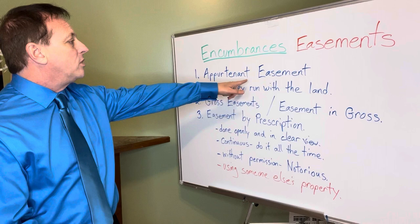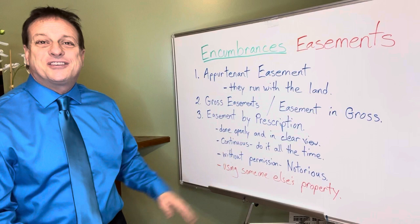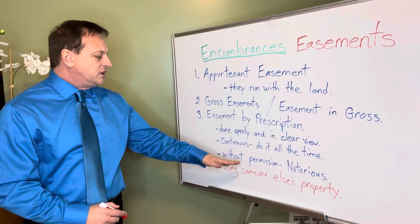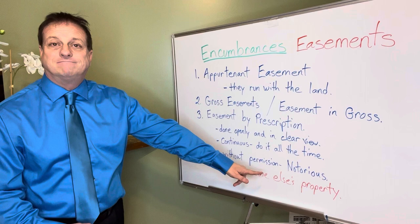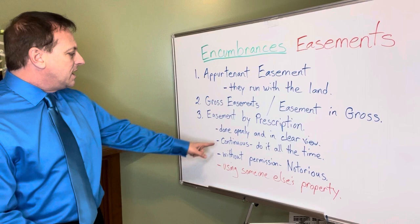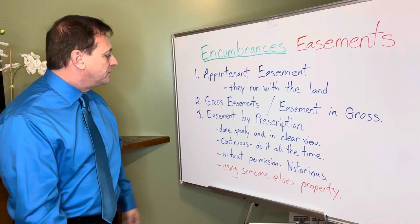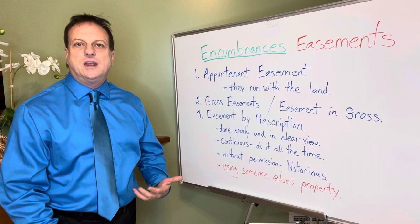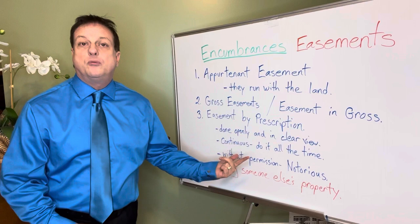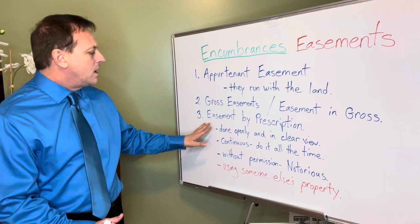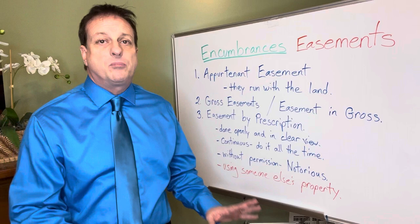Number three is an easement by prescription. This is something very unique — it's where someone is using someone else's property without permission. It's a notorious thing, but they're using someone else's property and it's continuous — they do it all the time. Hunting is a good example. It's done openly and in clear view. To be an easement by prescription, it must fit all of these: done all the time, done openly and in clear view, without the homeowner's permission.